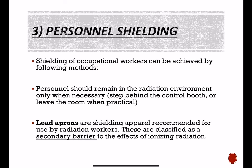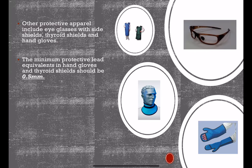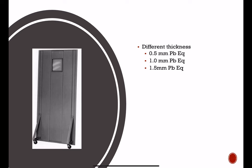For personal shielding, we have protective apparel such as thyroid shielding, lead gloves, lead glass, and lead apron. This personal protective gear should remain in the radiation environment only when necessary, and it is also classified as a secondary barrier. The minimum protective lead equivalence for hand gloves and thyroid shielding should be 0.5 millimeter, and for the apron it should be 0.25 millimeter, 1.0 millimeter, or 1.5 millimeter lead equivalent.